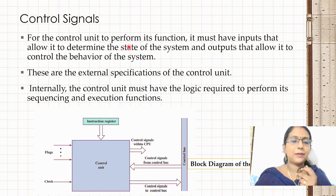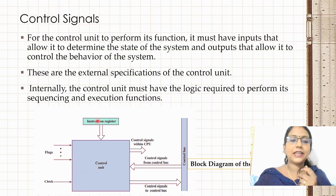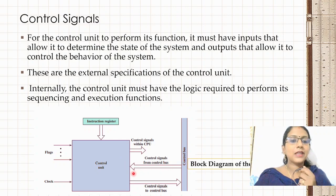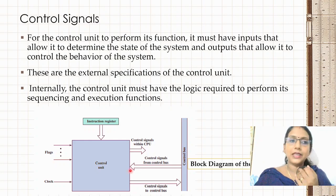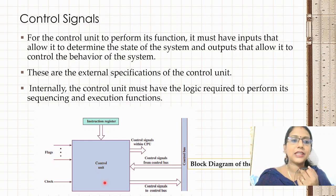The control unit has inputs and outputs connected via the control bus. Within the CPU there is a control bus, and outside the CPU there are external and peripheral devices connected via control signals. The internal logic of the control unit consists of circuits, gates, and flip-flops, which handle both sequencing and execution.